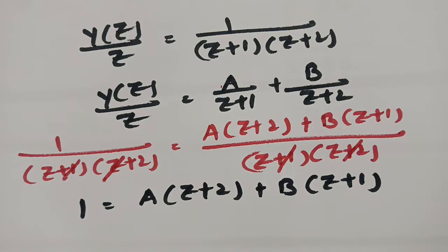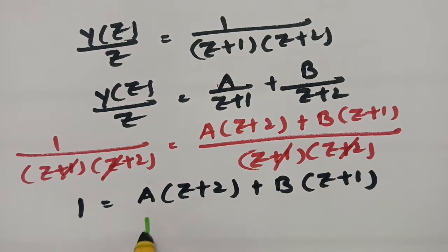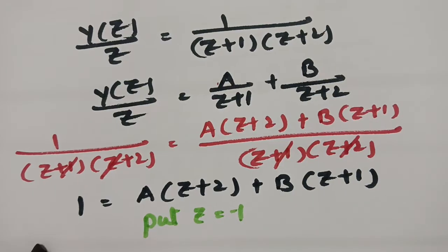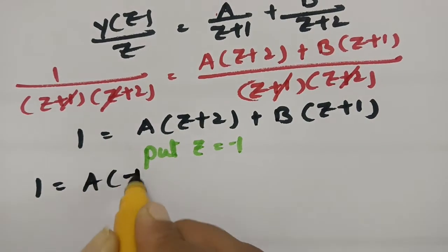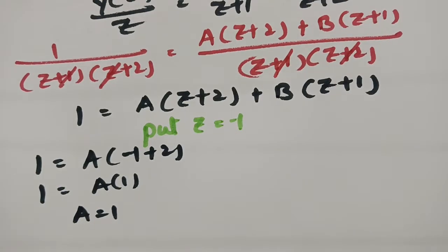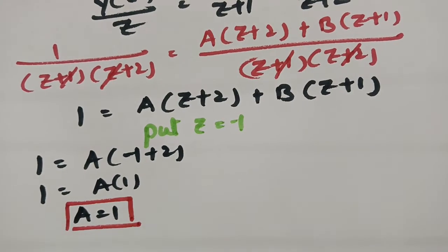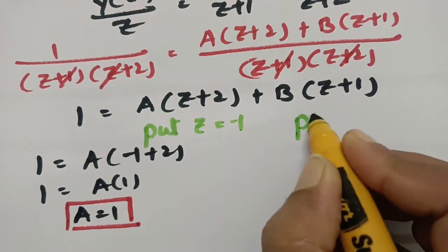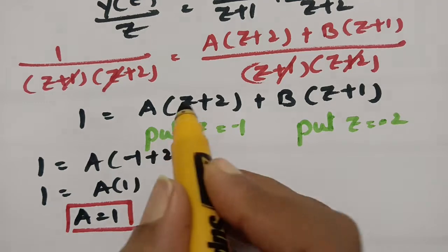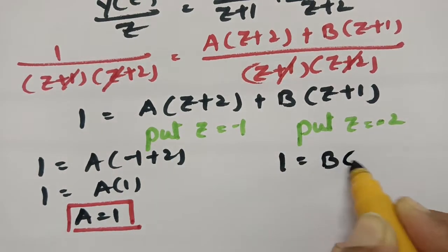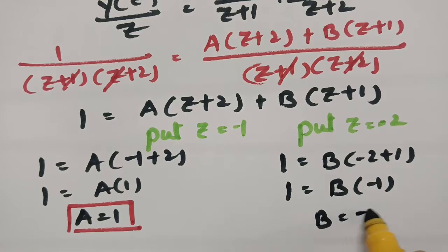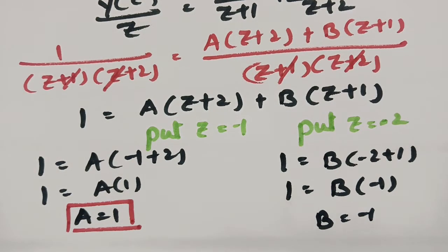To find A, put Z = -1. This makes B's term zero, giving 1 = A(-1+2) = A·1, so A = 1. To find B, put Z = -2. This makes A's term zero, giving 1 = B(-2+1) = B·(-1), so B = -1.